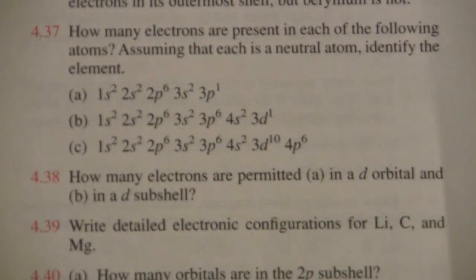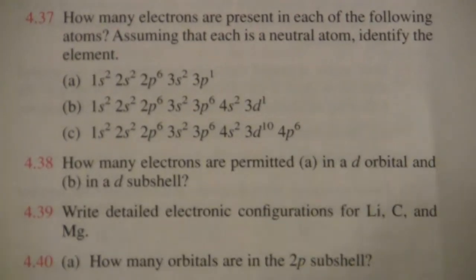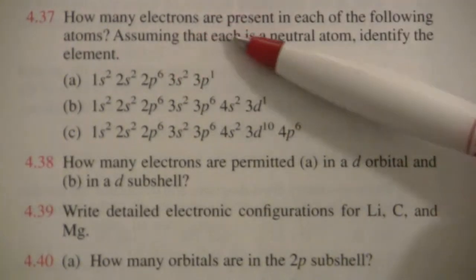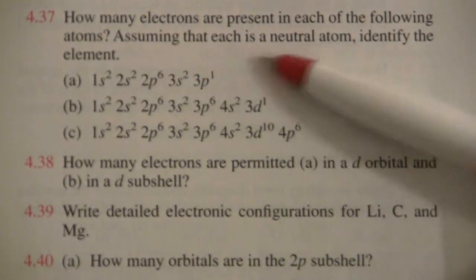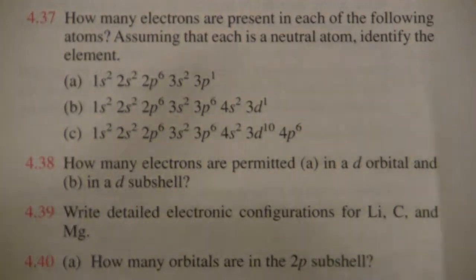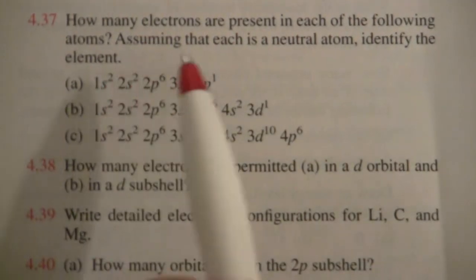These problems will give us some practice with electronic configuration. Here it's asking how many electrons are present in each of the following atoms? Assuming that each is a neutral atom, identify the element. So two questions: how many electrons and what is the element?